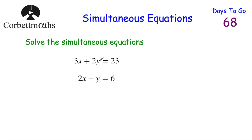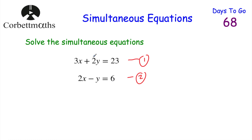If I was asked to solve simultaneous equations like this, what I would look to do is try to cancel out one of the letters, or one of the variables. We've got our x's and our y's. We've got 2y here and we've got minus y here. If we double the bottom equation — let's number them equation 1 and equation 2 — if we multiply equation 2 by 2, we would get minus 2y, and 2y plus minus 2y gives us 0.